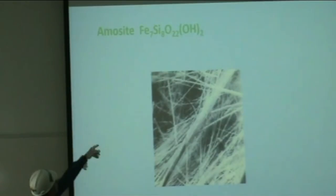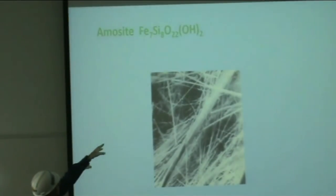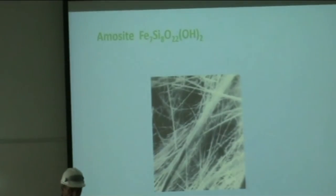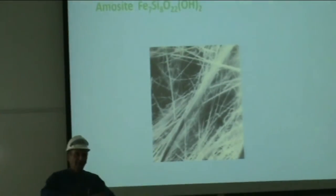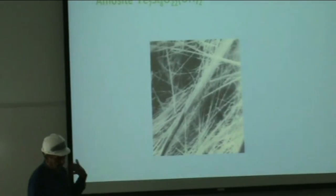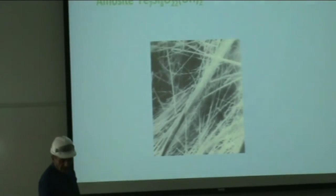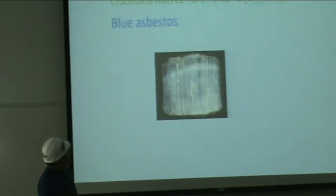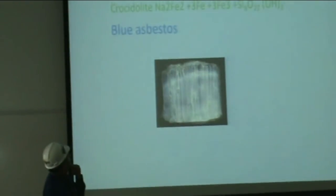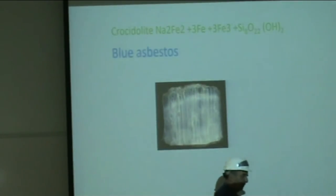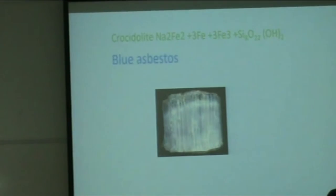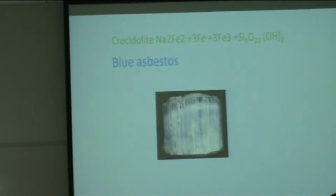Then we have amosite — notice it contains iron and silicon. These actually come from South Africa and are probably the worst to deal with because in order to remove asbestos, you have to wet it with a surfactant, which lowers the surface tension and prevents dust. And of course we have blue asbestos, called crocidolite. I actually have specimens of each of these types here on the table — I have samples.